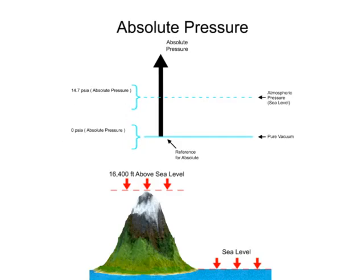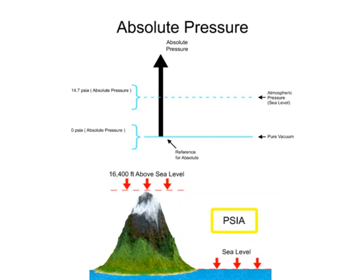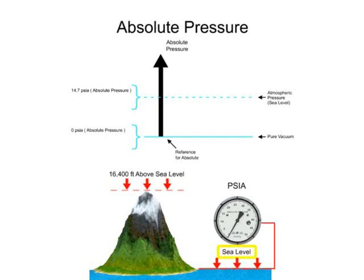The unit of measurement for absolute pressure is pounds per square inch absolute, abbreviated as PSIA. When the pressure sensing device is exposed to the atmosphere at sea level, the measurement scale will read 14.7 pounds per square inch.